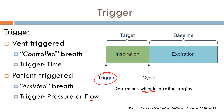For controlled breaths, the time between each delivered breath is determined by the respiratory rate. For assisted breaths, you have to plug in a numerical value for the pressure or the flow. For example, if the flow is set to 3 liters per minute, that means if the patient initiates a breath and that breath surpasses the threshold of 3 liters per minute, then that breath is delivered.